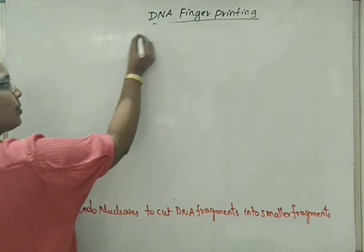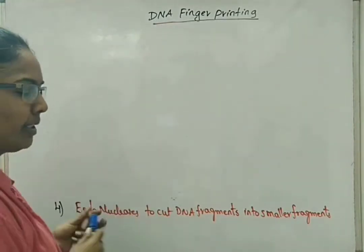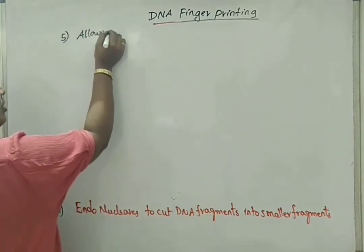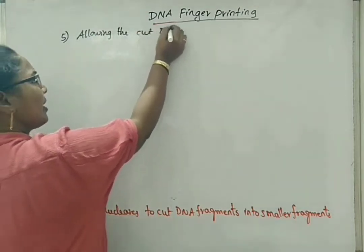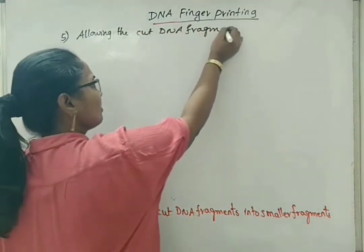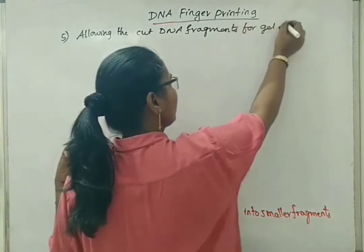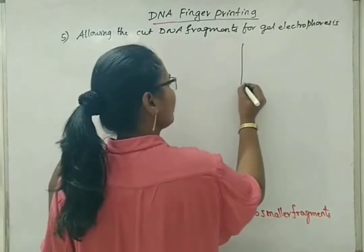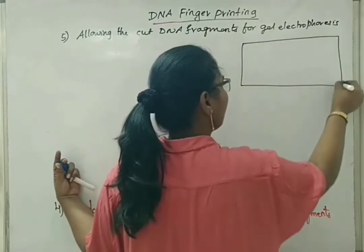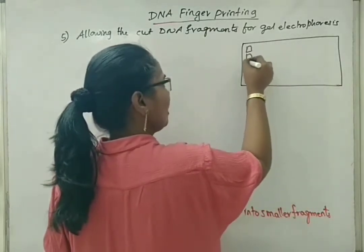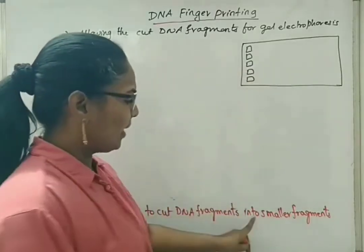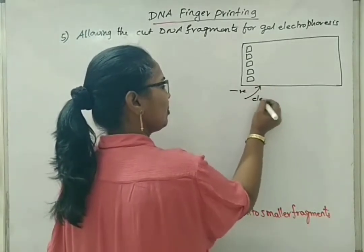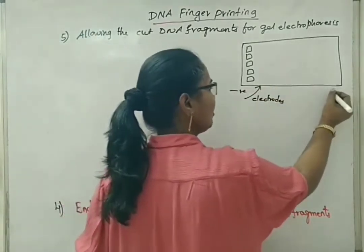After obtaining the small DNA fragments, they are allowed for gel electrophoresis — this is the fifth step. In gel electrophoresis, we take a solidified agarose gel in which wells are already prepared. We pour the smaller DNA fragments into those wells, connected with electrodes, and current is continuously passed.